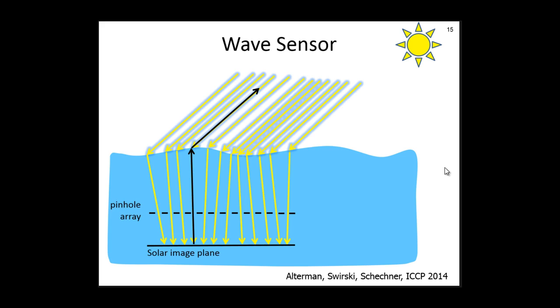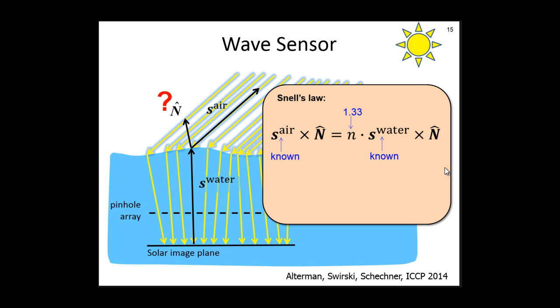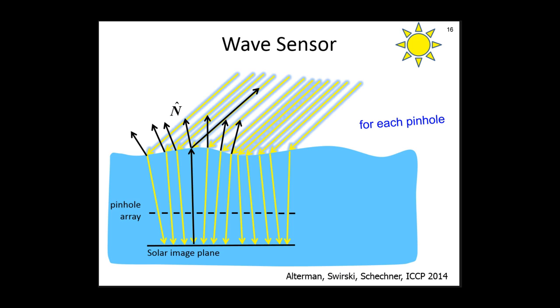Let us look at a single sun ray. The vector s_water is the direction of a sun ray in the water. In air, the unit vector pointing to the Sun is s_air. Our goal is to estimate the water surface and thus we seek the normal n. This is a vector form of Snell's law. The vector pointing to the Sun is always known given the time and geographic location. The vector inside the water is extracted from the sensor image data. So we can compute n. We repeat this process for each pinhole.